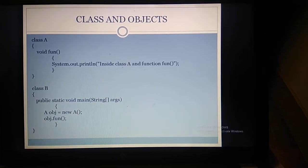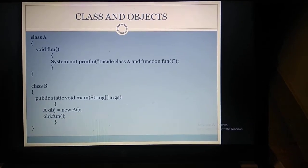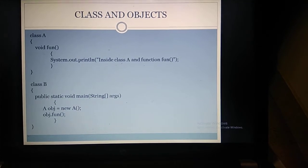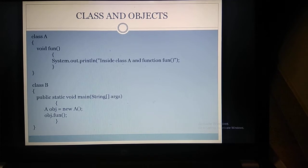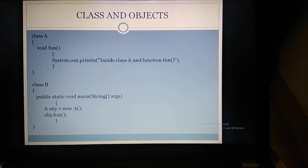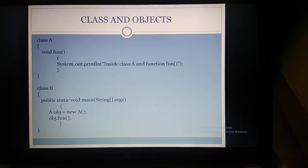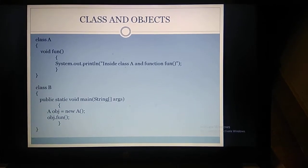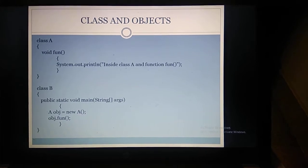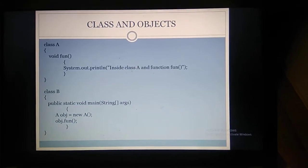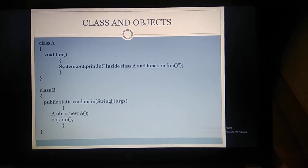I am creating class B. Inside class B we are having public static void main as the main function, and we are creating an object for class A. How to create an object: class name, space, object name, equal to, new, class name. So the class name is A, object name is obj — equal to new A, open parenthesis, close parenthesis, semicolon. Then we call the method: obj.fun. When we give obj.fun, the fun method is called, it executes the statement inside class A and prints the output. Then control comes out of the program.